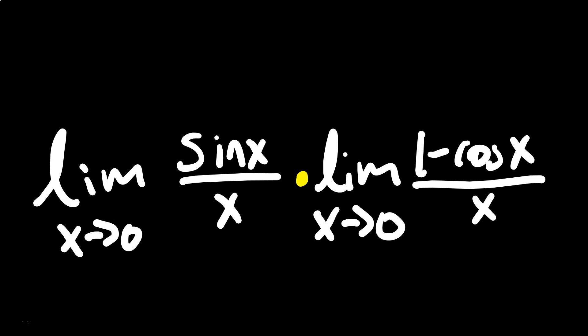Each of these limits is well-known already. So we're going to have just 1 times 0 — those are the limits. 1 times 0, of course, is 0. And that's the answer.